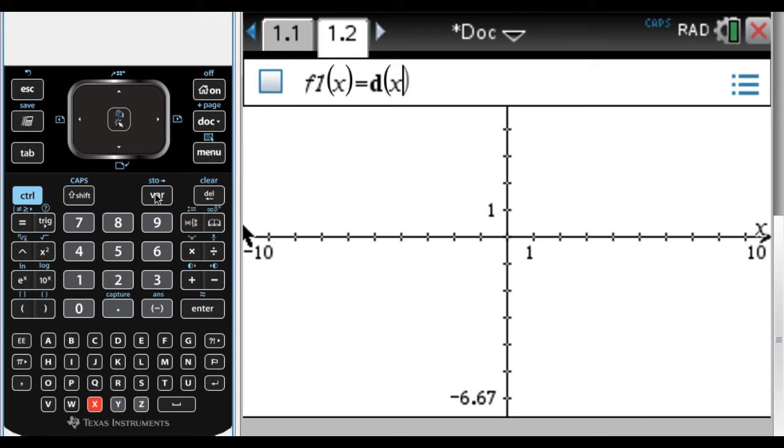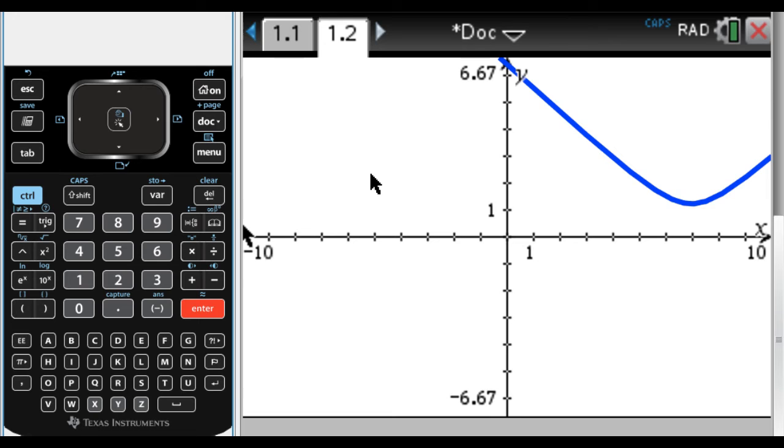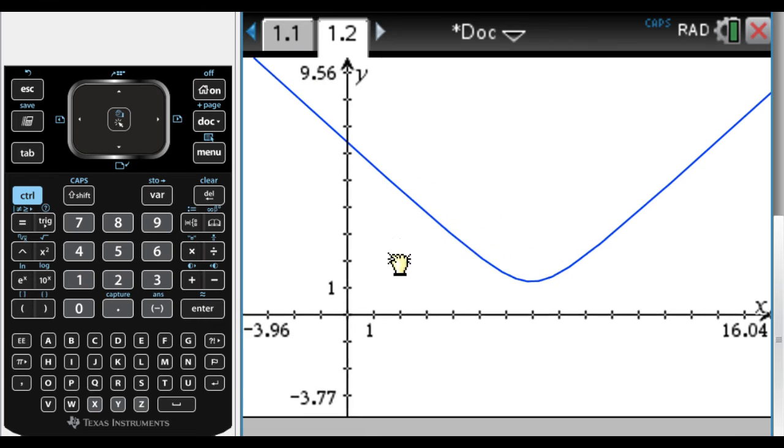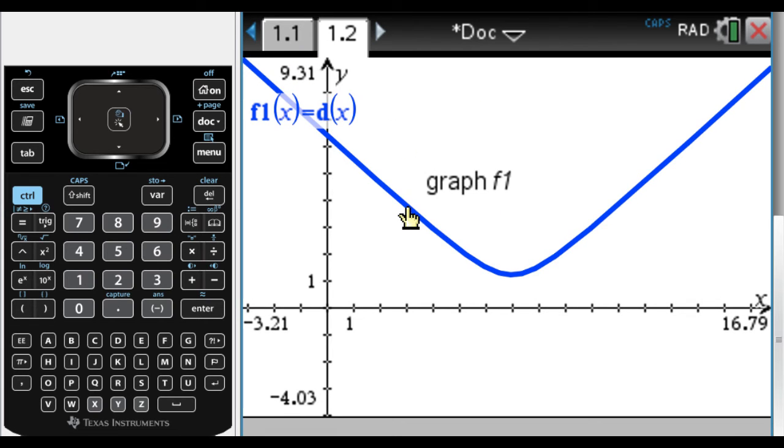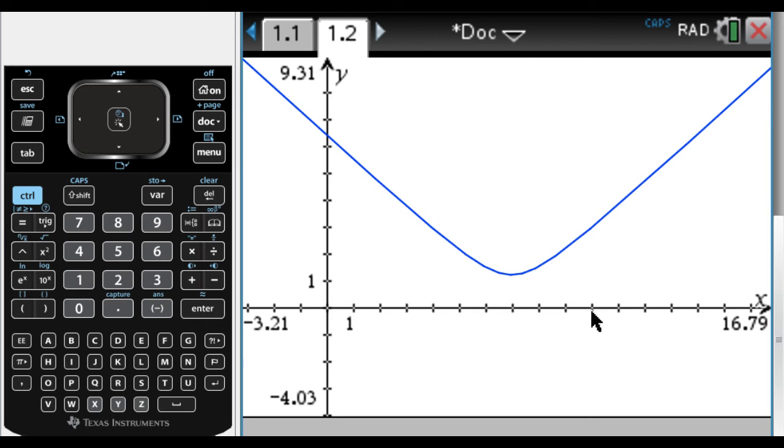If you try to do d(t), it asks if you want to create a slider, and you don't want that. And also, it just won't graph anything at the end. So I'm going to press enter. And then I need to kind of change the window a little bit. So I'm just going to click and drag. And here we can see. So this is a graph of distance as a function of time.